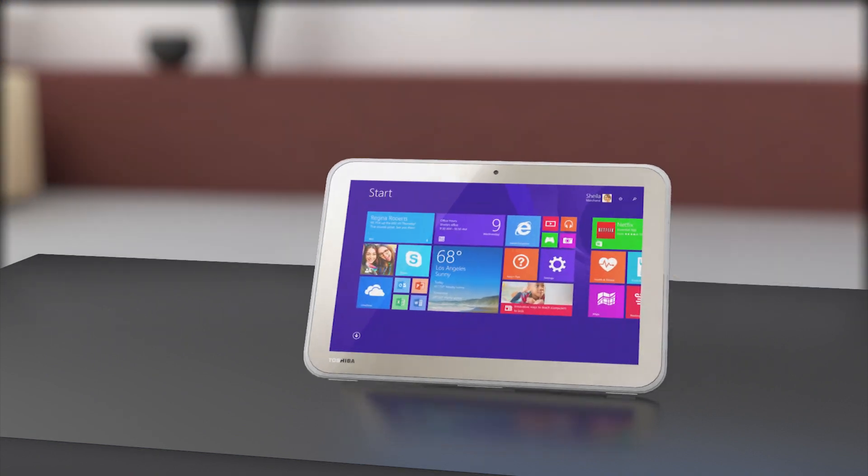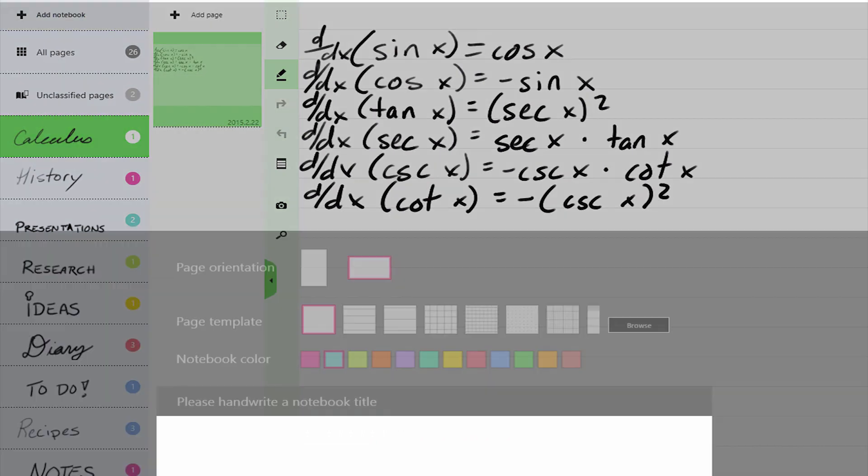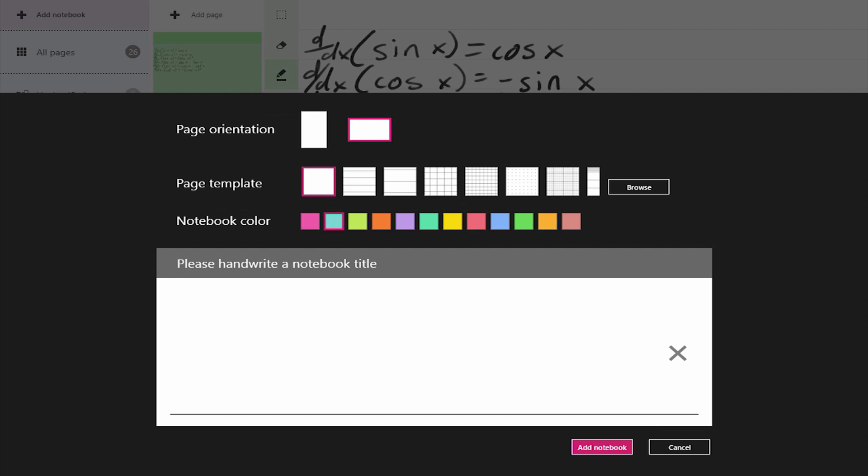When you're in a class and want to start taking notes, first open TrueNote. Since this is a new subject, we'll create a new notebook, which is basically a folder. We'll orient the page like this, use a grid, choose this blue, and name it here in the box.